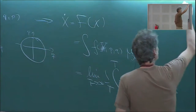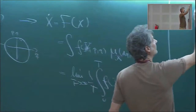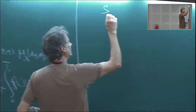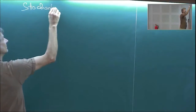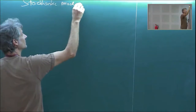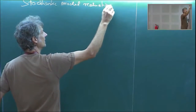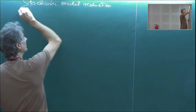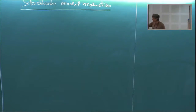Today I want to start talking about stochastic model reductions. This will have two methods: the method of averaging, and then an extension which is the method of homogenization.